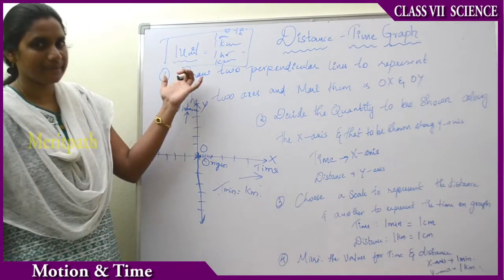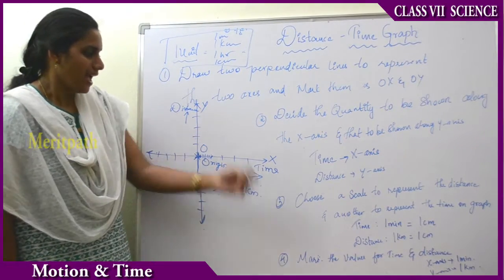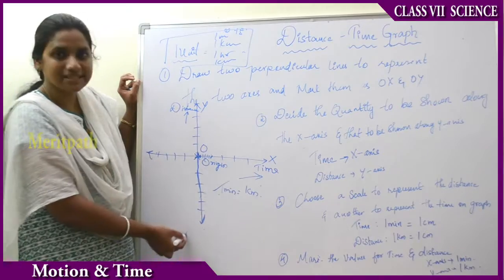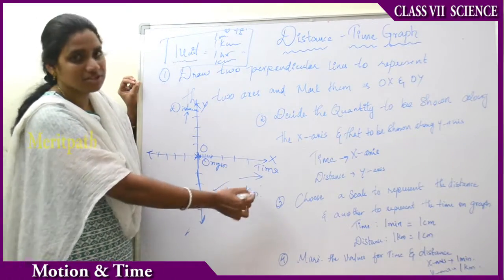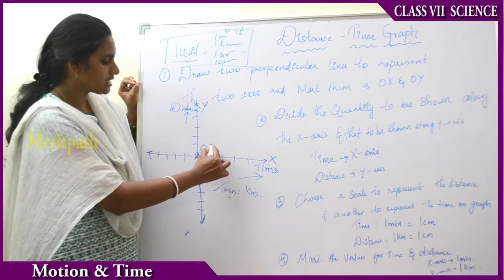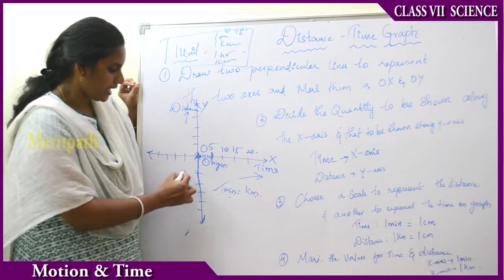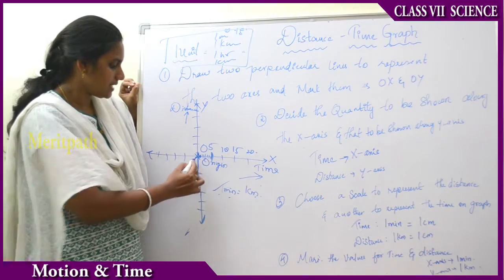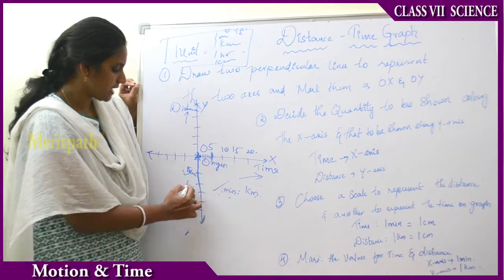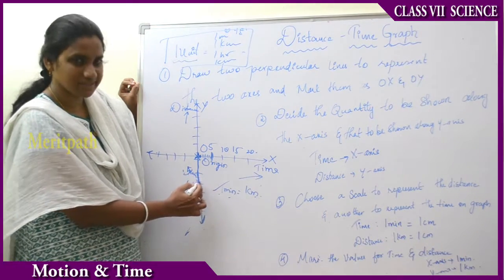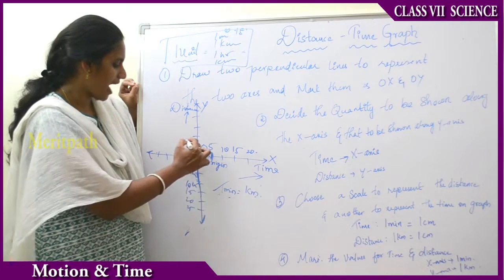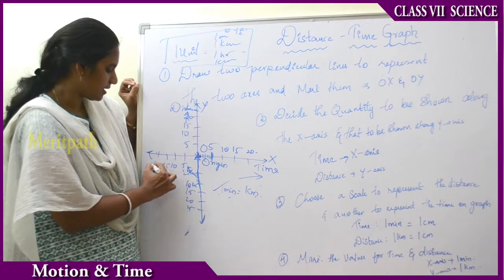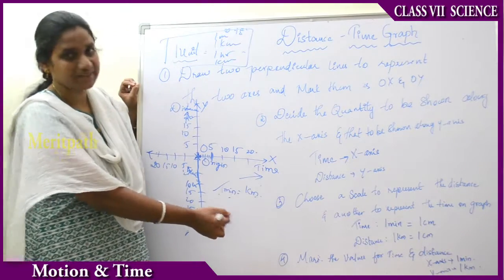The fourth step is to mark the values of time and distance. Having plotted the scale, I now mark: on the x-axis — 5, 10, 15, 20 minutes and so on; on the y-axis — 5 kilometers, 10 kilometers, 15, 20, 25 kilometers and so on. From the table given on the right, at 1 minute he travelled 1 kilometer, 2 minutes 2 kilometers, 3 minutes 3 kilometers, and so on. We plot each of these points on the graph paper.